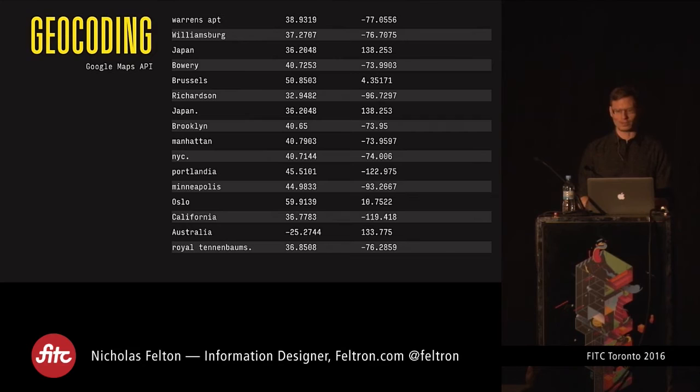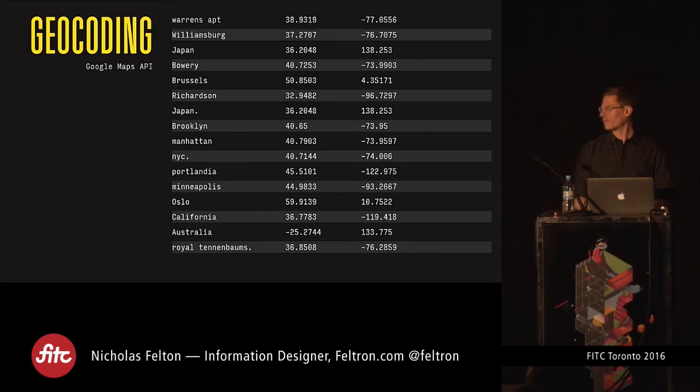I was also competent enough to automatically geocode things using Google's API. But this is where the automated scale allows a lot of things to happen that shouldn't. For example, 'Warren's apartment' — Google should never know where this is, yet it returns a latitude and longitude. Or 'Oslo,' which is not a city I visited that year but the name of the coffee shop I go to. You can see these kinds of miscommunications, and I'm sure there will be fewer and fewer as this technology evolves.